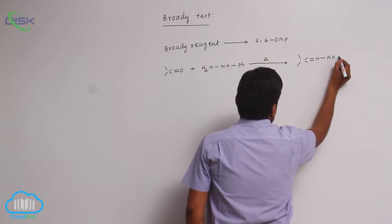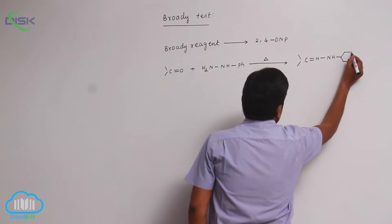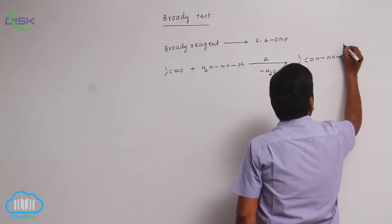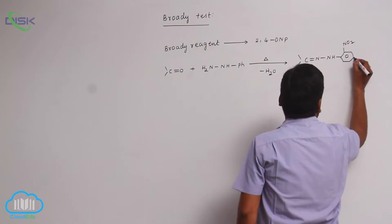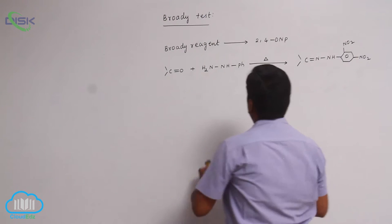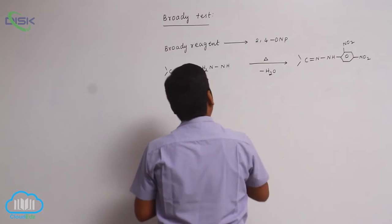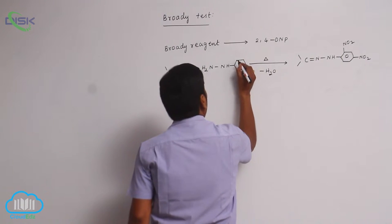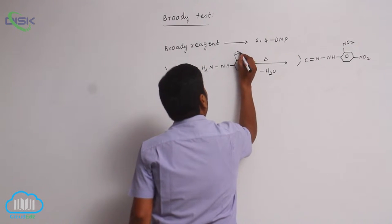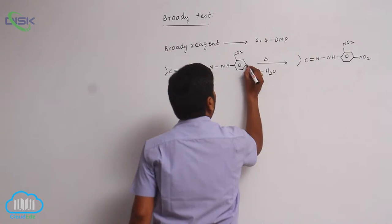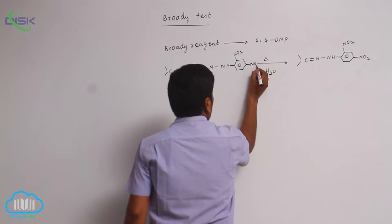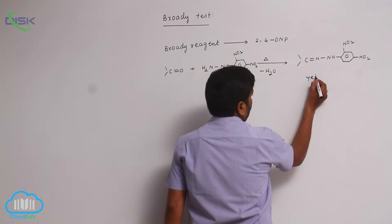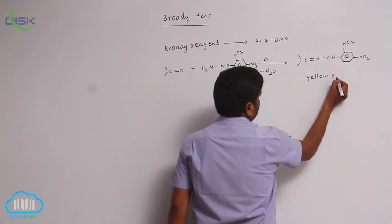The product contains an NH group and nitro groups (NO2) on the phenyl ring — there is a nitro group here and also a nitro group here (NO2). This gives a yellow colour precipitate.